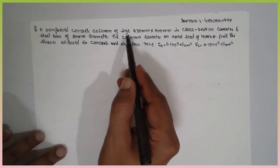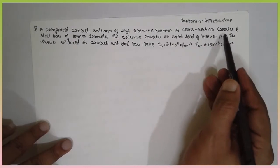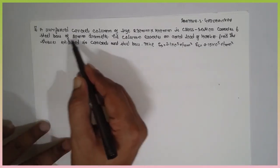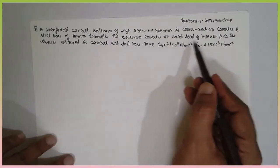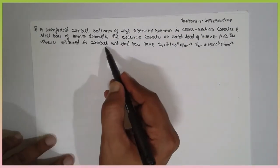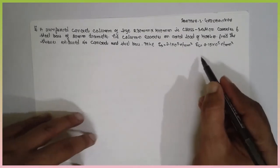A reinforced concrete column of size 230 mm into 400 mm cross-sectional, carrying six steel rods or bar of 20 mm diameter. The column carries an axial load of 400 kN. Find the stresses induced in the concrete and the steel. The Young's modulus for the steel and concrete is given.